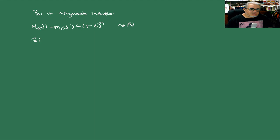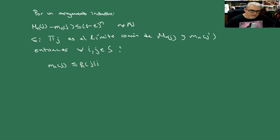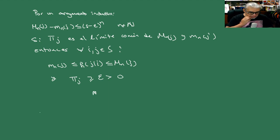Entonces, si π_J es el límite común de M_N(J) y m_N(J) —los máximos y los mínimos— entonces para toda I, J en S, esto 'ensangüicha' a P^N(J|I), y como convergen se portan bien. Lo que tenemos es que π_J es mayor o igual que Epsilon, que es positivo, que era lo que queríamos comprobar.